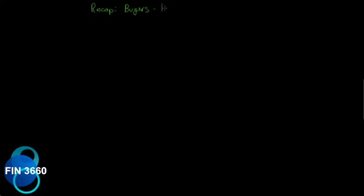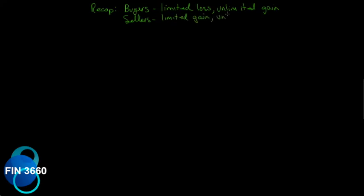Let's continue with our options chapter and have a small recap. Buyers face a limited loss — all they can lose is the value of their premium — but they can experience unlimited gain. This is important when we get to the Greeks, where we'll see that buyers are long gamma. Sellers have the reverse: limited gain and unlimited loss, because they are short gamma.